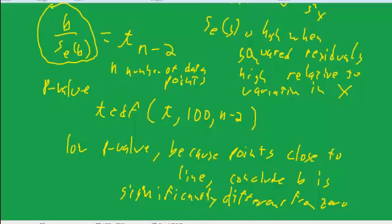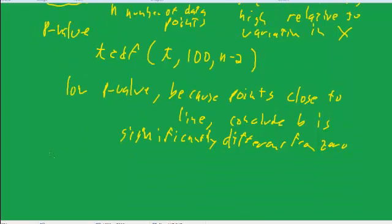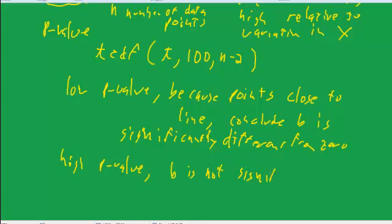Conversely, if we get a high p-value, we conclude that b is not significantly different from zero.